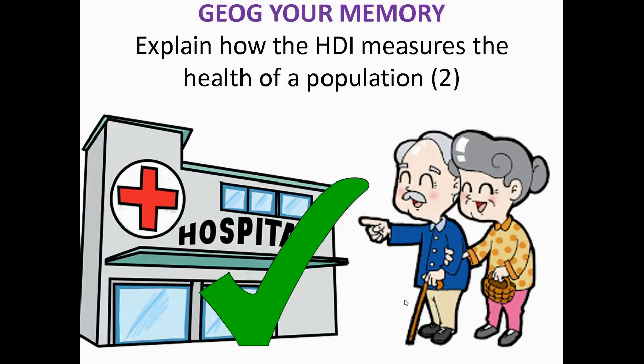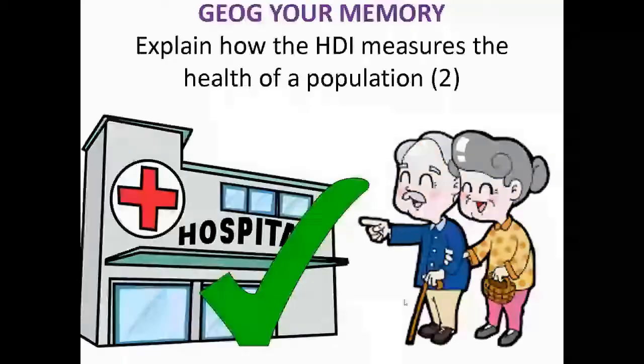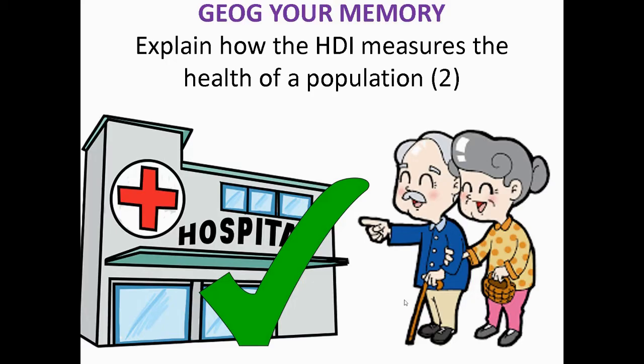We've got another paper one Joggy Memory Exam question here, so this has come off of one of the past papers. They like to ask you about development indicators, so make sure you know your different indicators for economic, social and political indicators to show how advanced a country is.